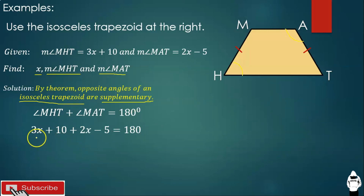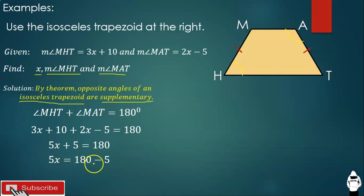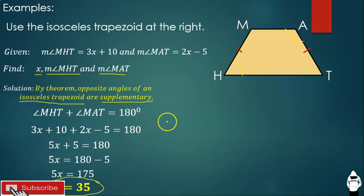Setting up the equation: angle MHT plus angle MAT equals 180 degrees. Substituting: (3X + 10) + (2X − 5) = 180. Combining like terms: 5X + 5 = 180. Using the subtraction property of equality: 5X = 175. Dividing both sides by 5, X equals 35.